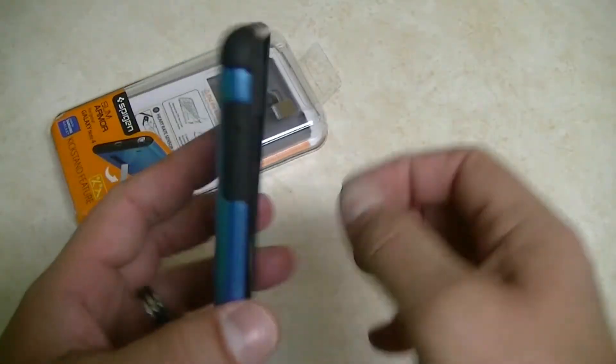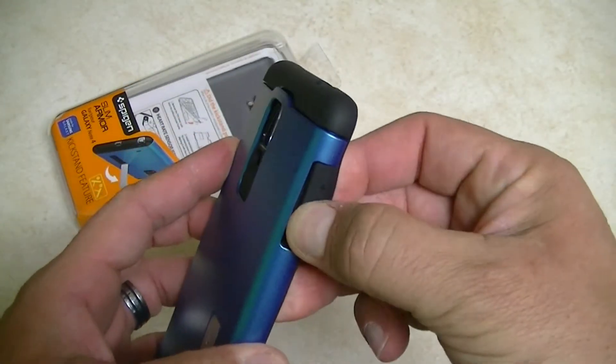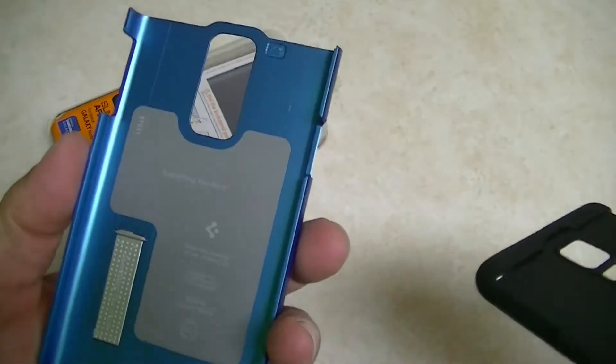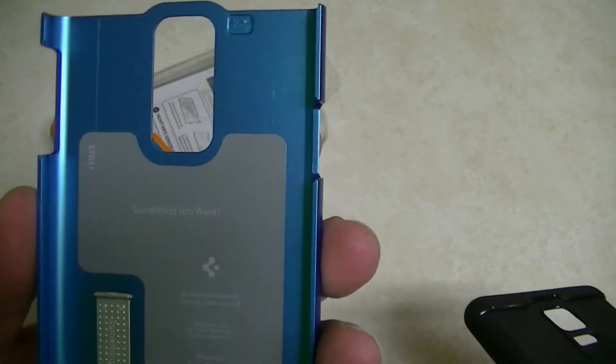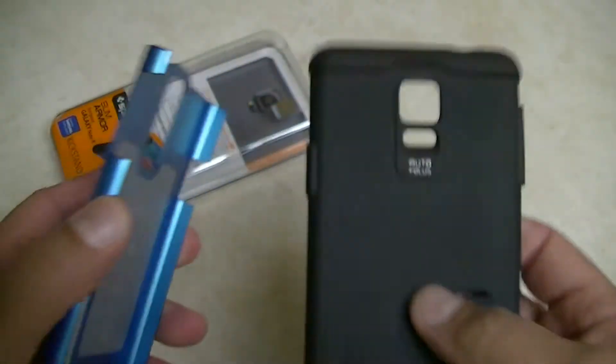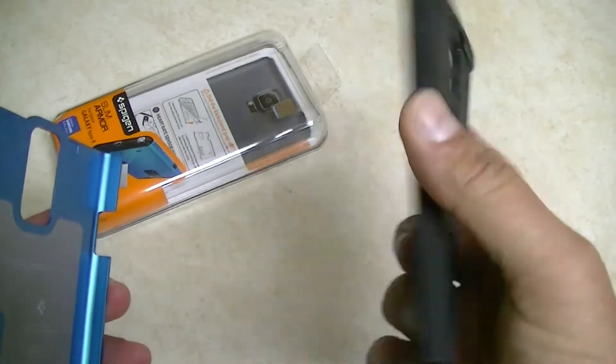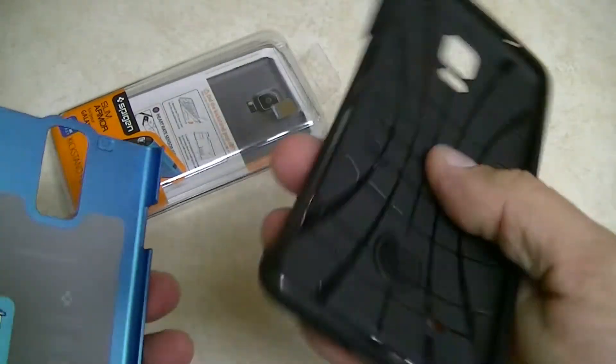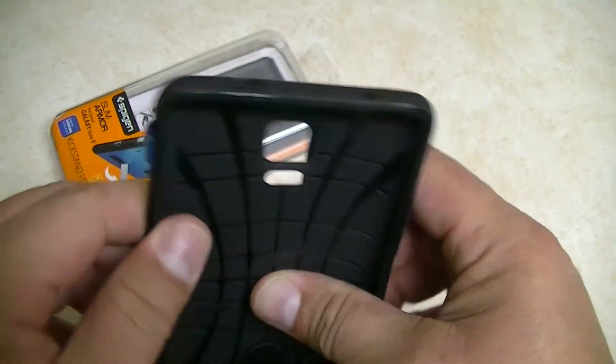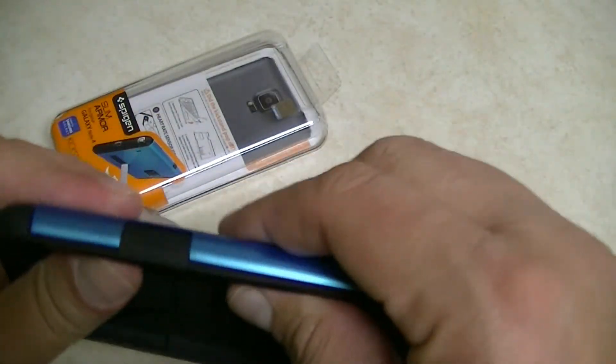Also, this is a dual-layer case, so we can go ahead and remove the rubber part from the plastic part. This is how the case looks like inside. This is hard plastic and this is flexible plastic or rubber, which is really good because it will absorb the impact in case you drop the phone.